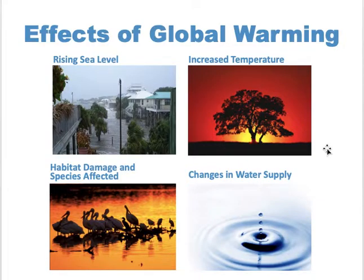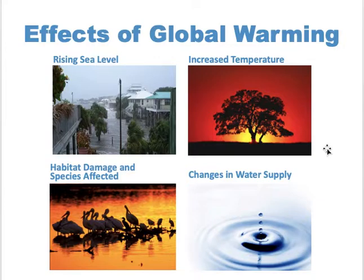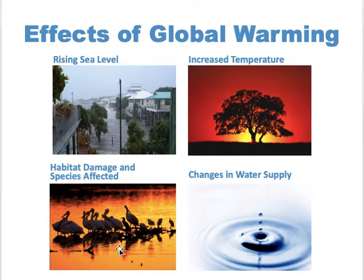What are the effects of global warming? First, you have sea level rise — the level of water in the ocean is rising. If there is global warming, we have the ice caps or polar caps at the north and south poles. When temperature rises, you will expect that the ice will melt. When ice melts, it adds to the liquid water, causing sea level rise. You will also expect that higher temperatures will affect all organisms — leading to habitat damage and species being affected.